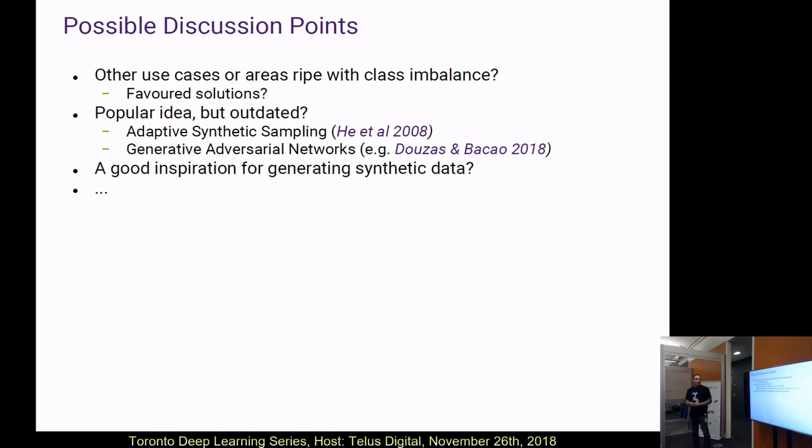We're interested in this algorithm for its potential in dealing with class imbalance, but also as inspiration for generating synthetic data. I'm curious from people in the audience familiar with that space — what other methods do you use? Do you think this is a good way of doing it? I've got arguments for why I like this idea, but I'm open for discussion.